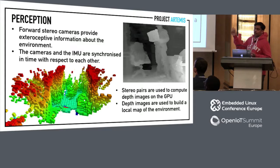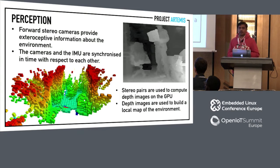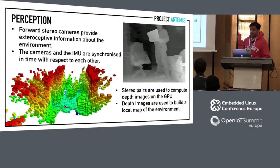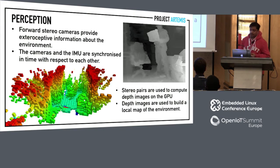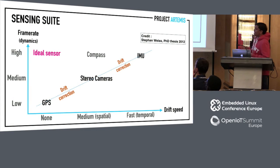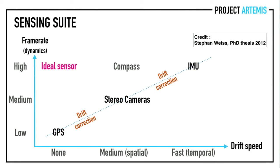For perception, we have forward stereo cameras, and the cameras and inertial measurement unit are time synchronized. Accurate timestamps for inertial measurements and camera frames are critical — a tuple of two camera frames and an inertial measurement is used to estimate vehicle motion via odometry methods. The stereo pairs are also used to compute depth images on the GPU by comparing disparity between the two images. These depth maps create a small local map around the vehicle so we don't bump into nearby obstacles.